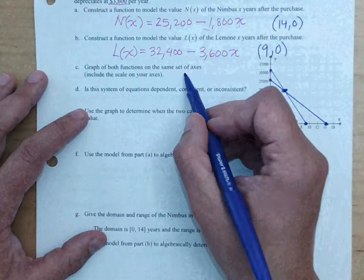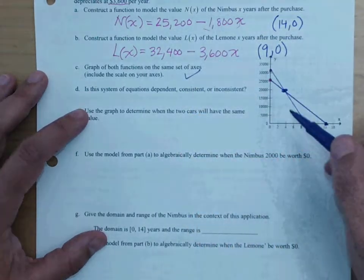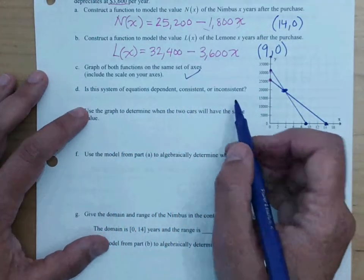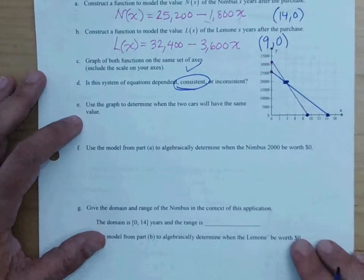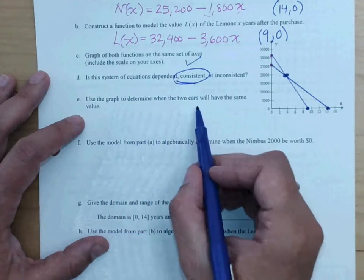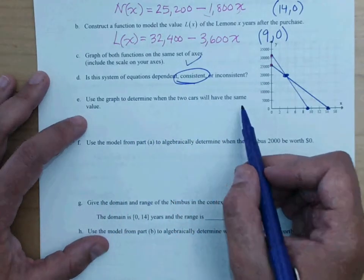So, graph the functions, we did that on the same set of axes. Is the system dependent, consistent, or inconsistent? You said consistent because there's one point of intersection. Use the graph to determine when the cars will have the same value.